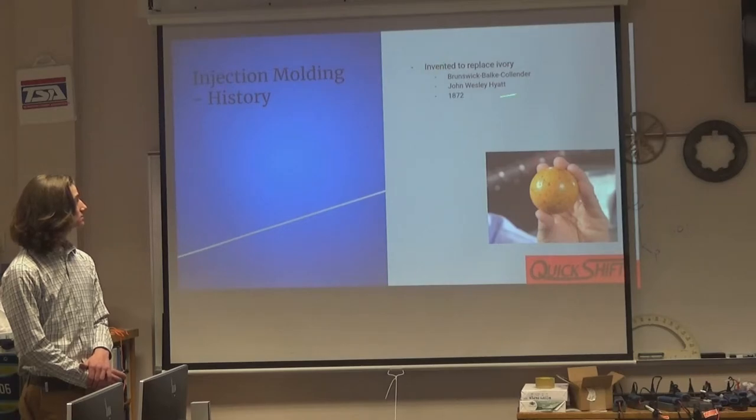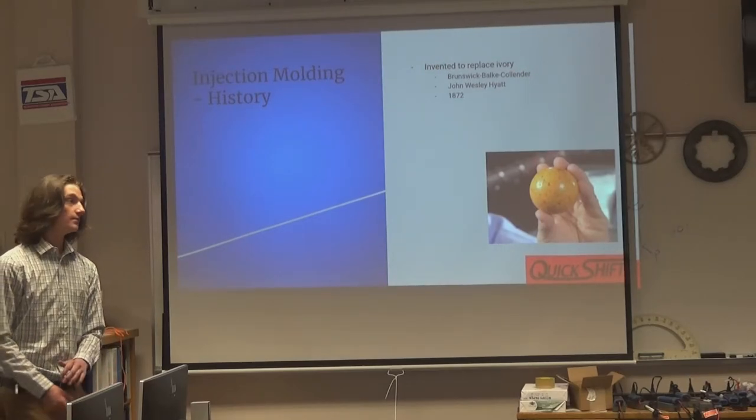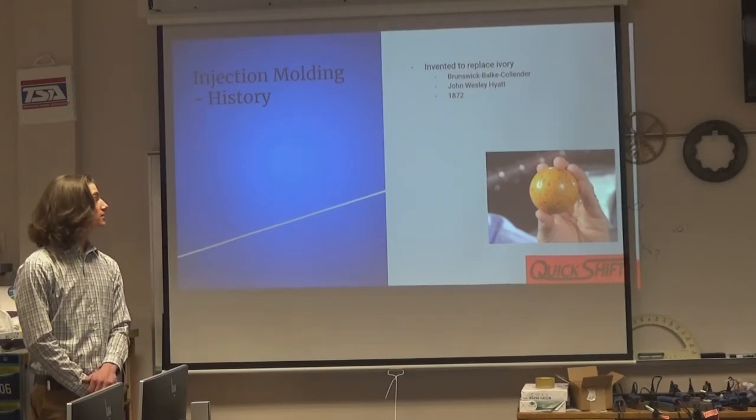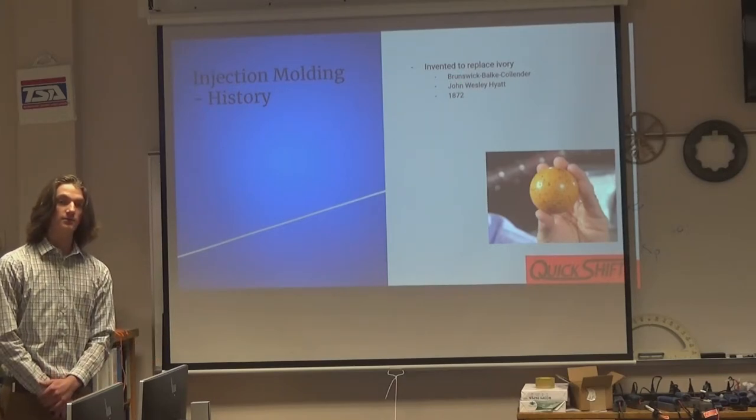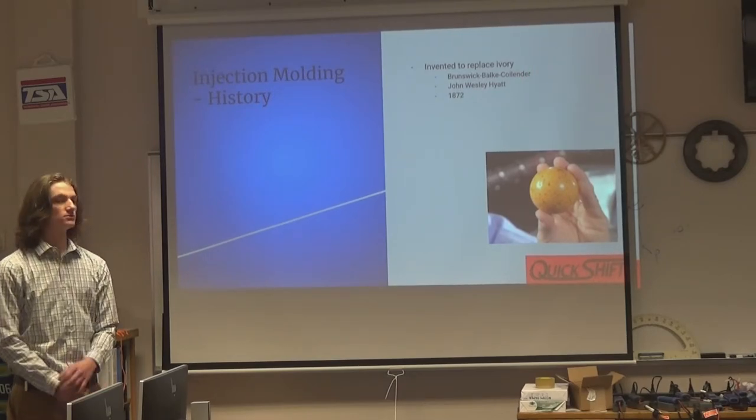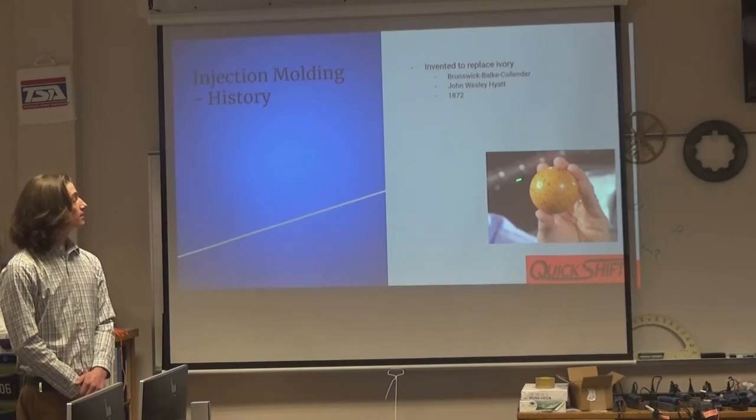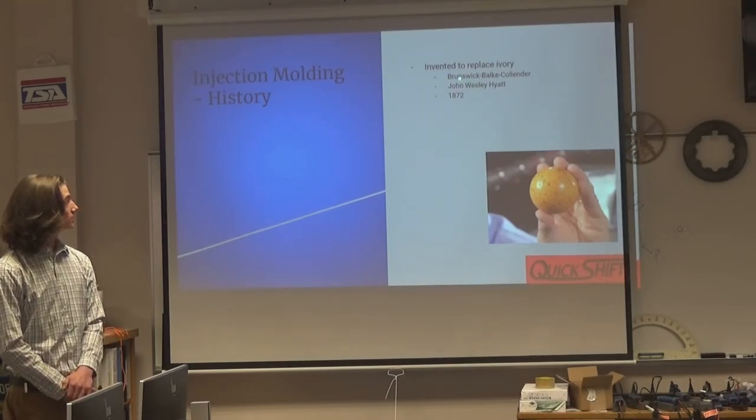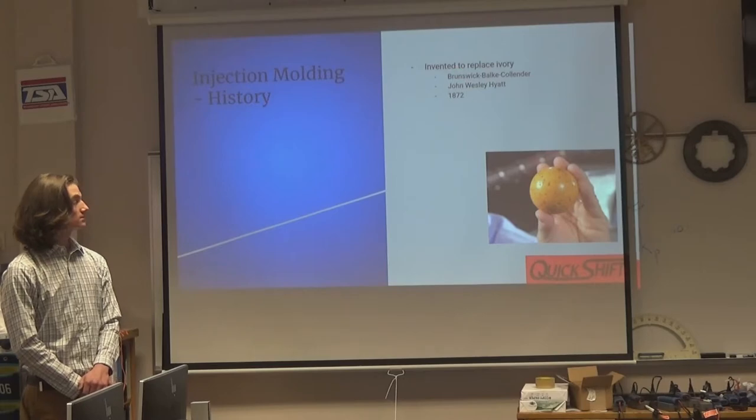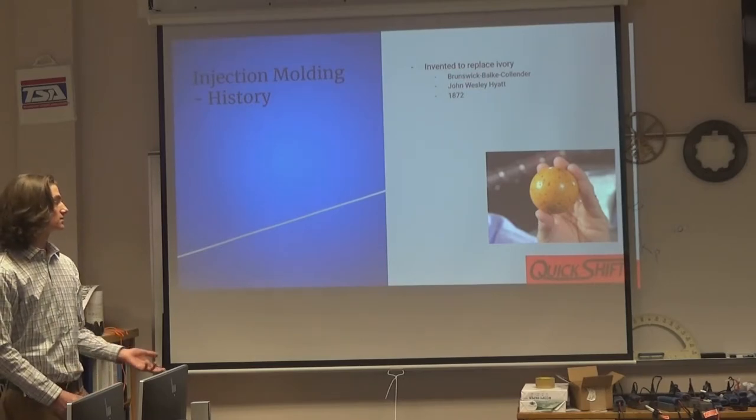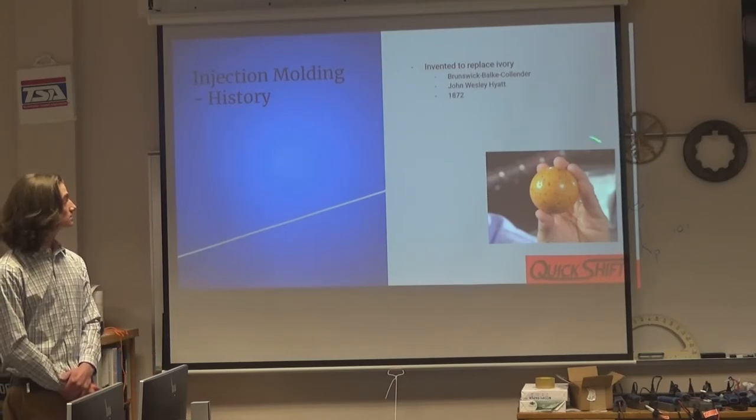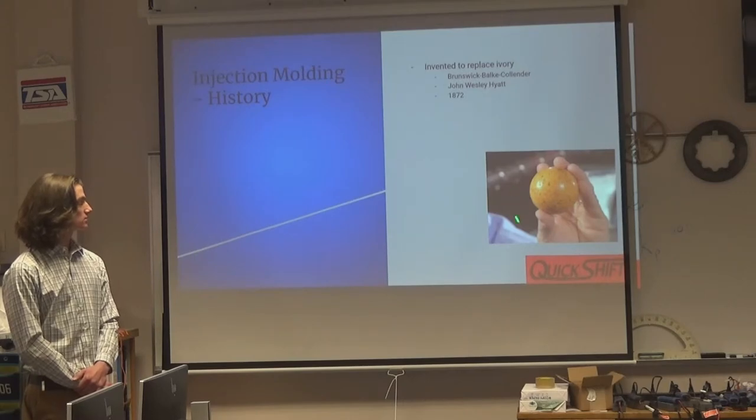So, it was invented to replace ivory for pool balls. Because one elephant, back in 1872, when they were using ivory, could make about eight to ten pool balls. So, with it being the most popular sport at that time, you can imagine how many elephants were being poached. So, this pool company put out a bounty for a replacement for ivory for pool balls. And, John Wesley Hyatt came up with plastic injection molding. He ended up not selling the invention to this company, because they did not have the right bounce, very similar to ivory. And, if you've ever played pool, you know it's very key on how the balance is with the pool balls. But, this is an example of what the first plastic injection molding object was.